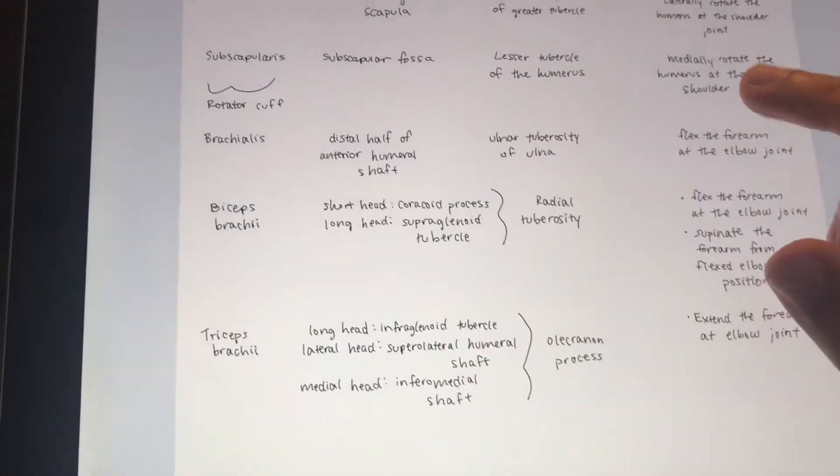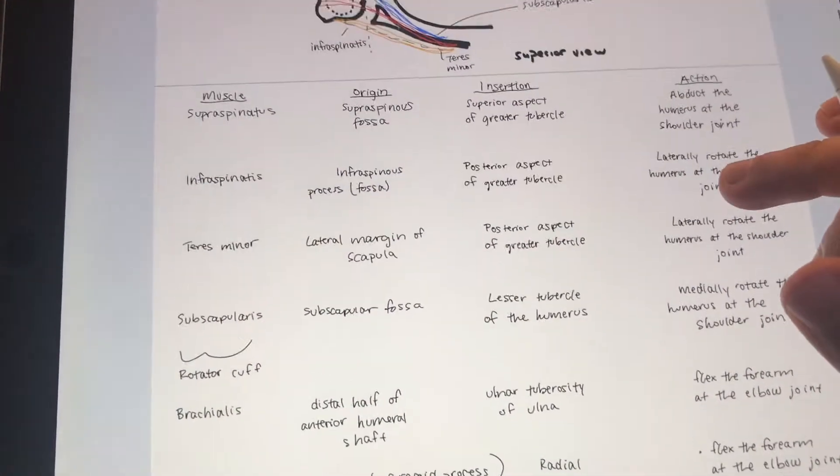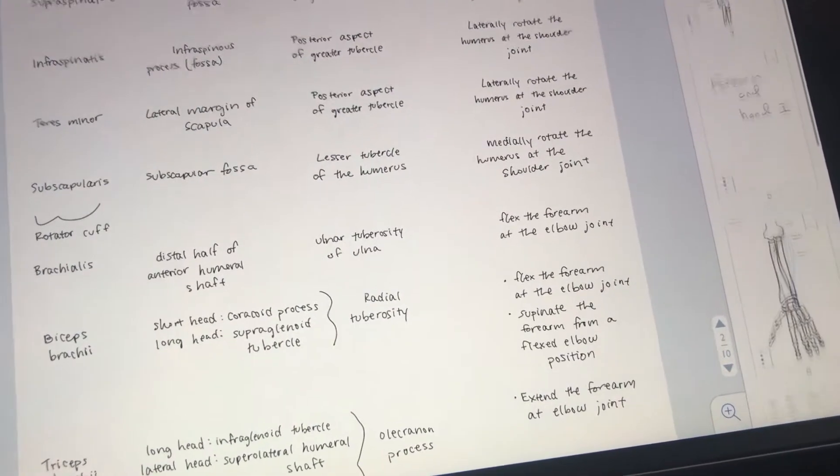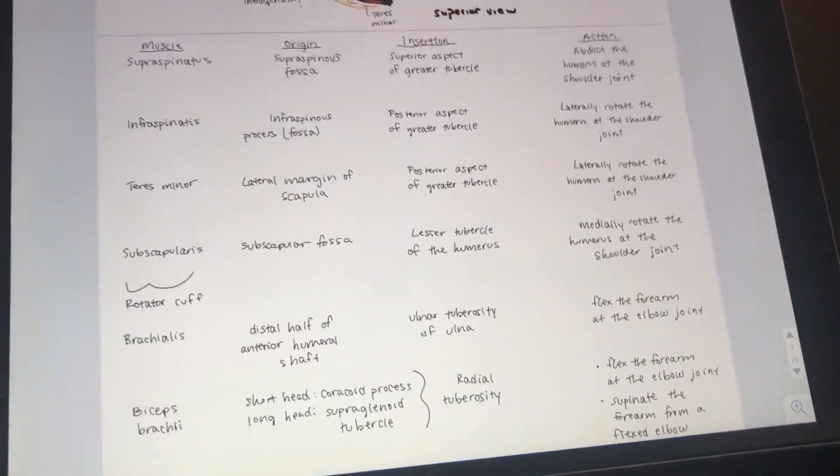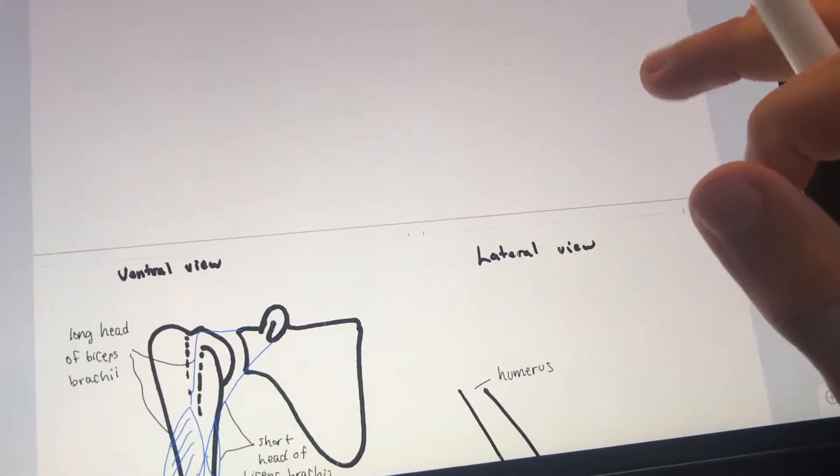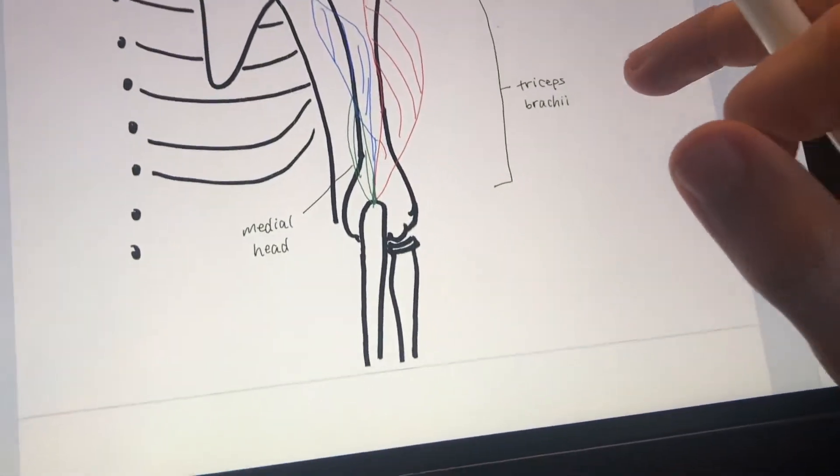But luckily with digital note-taking like Notability or any other note-taking service, you can just add as many pages as you want because it's all digital. And then you can rearrange the pages as you wish to without having to staple and unstaple repeatedly. So it's really nice.